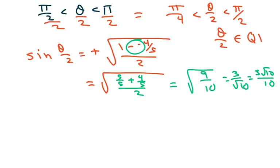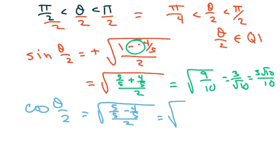And for the cosine, it's just going to be the opposite. It's going to be 5 over 5 minus 4 fifths over 2, which equals the square root of 1 over 10, which equals 1 over square root of 10, which equals square root of 10 over 10.